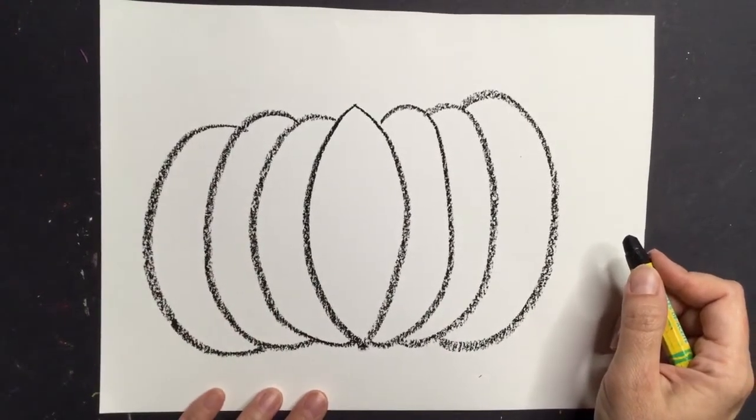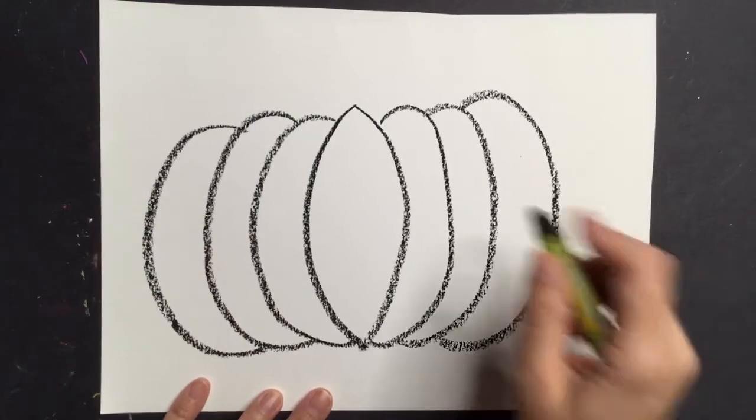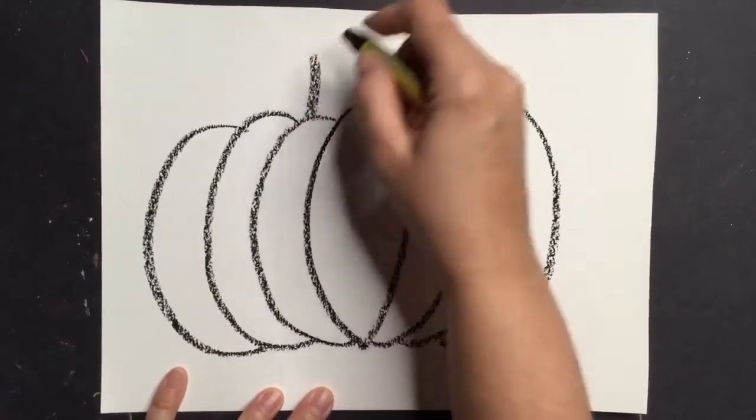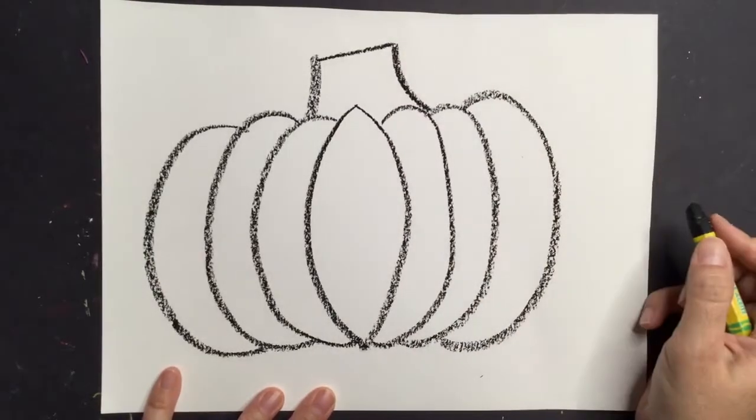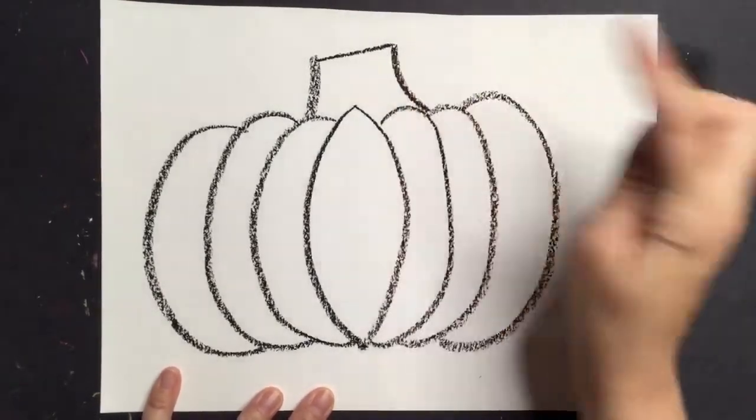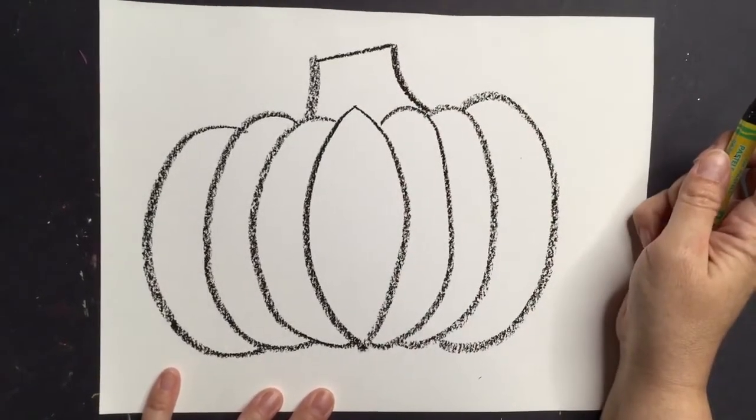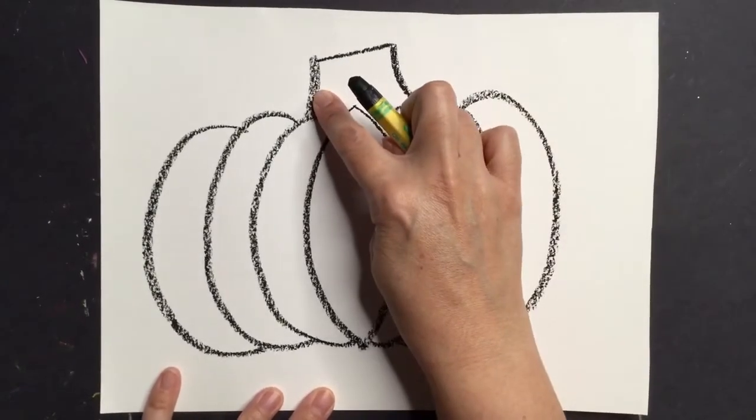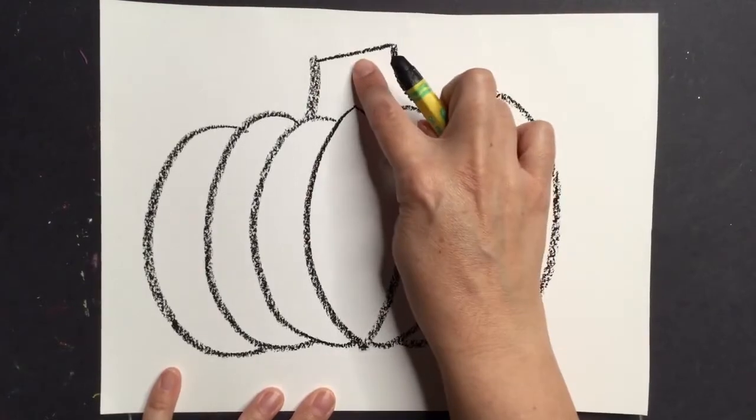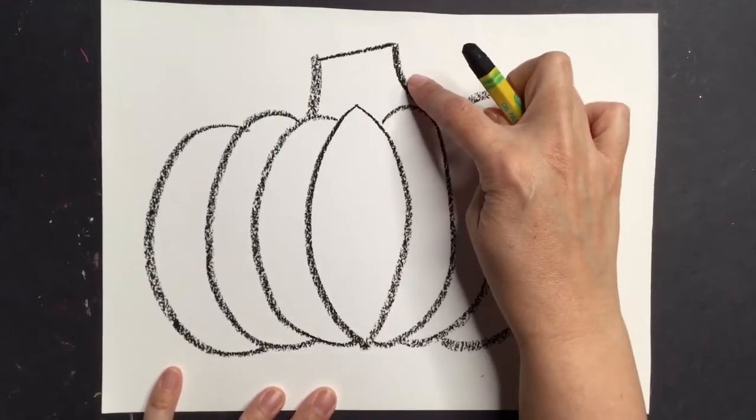Then I will add the stem. I will draw a curvy line, a straight line, and another curvy line, like this. Luego agregaré el tallo. Dibujaré una línea con curvas, una línea recta, y otra línea con curvas así.